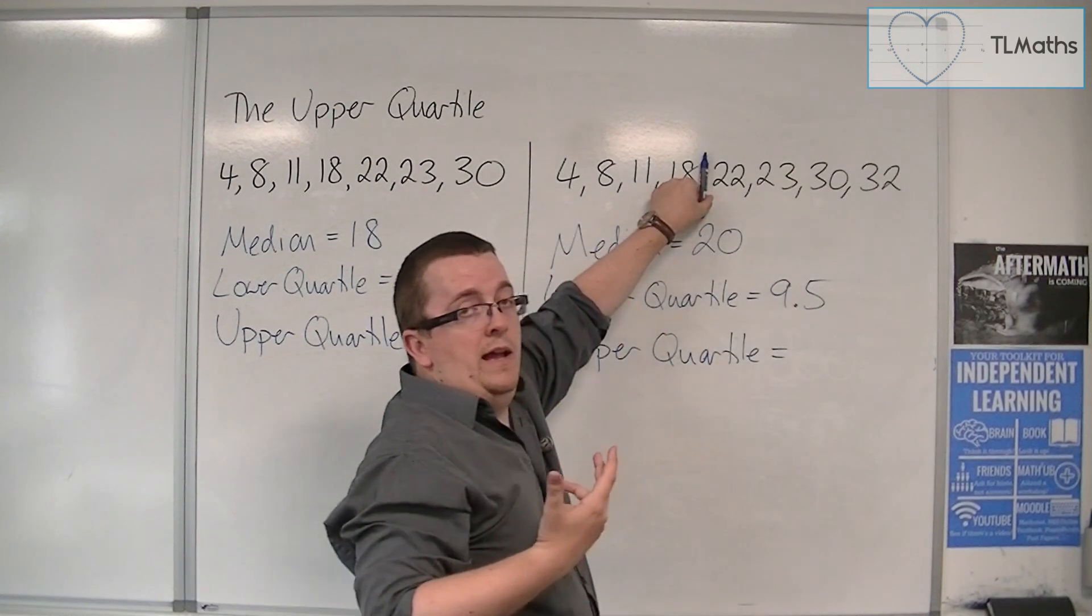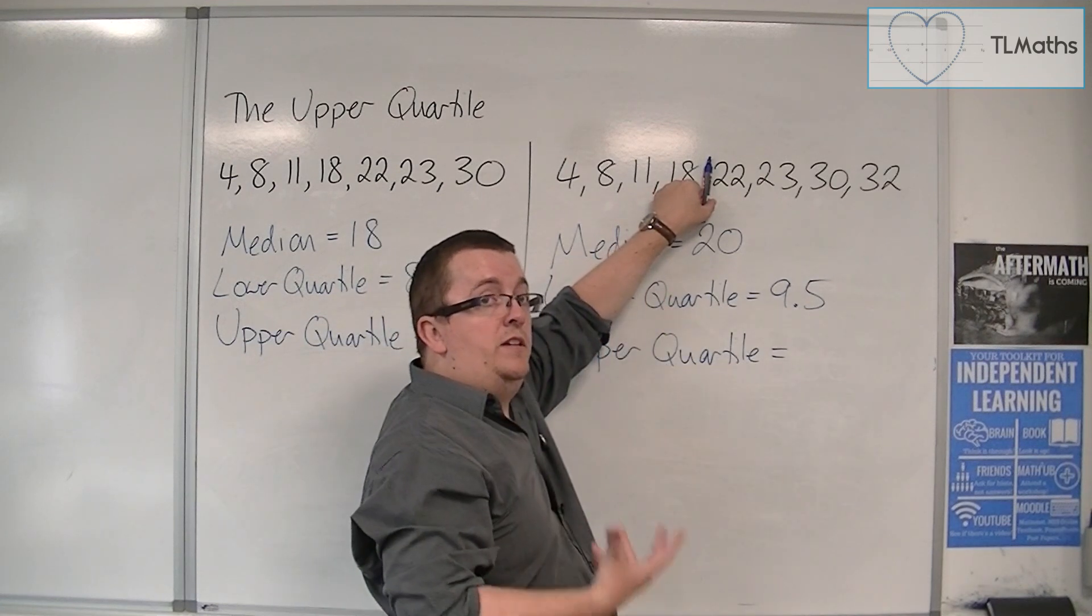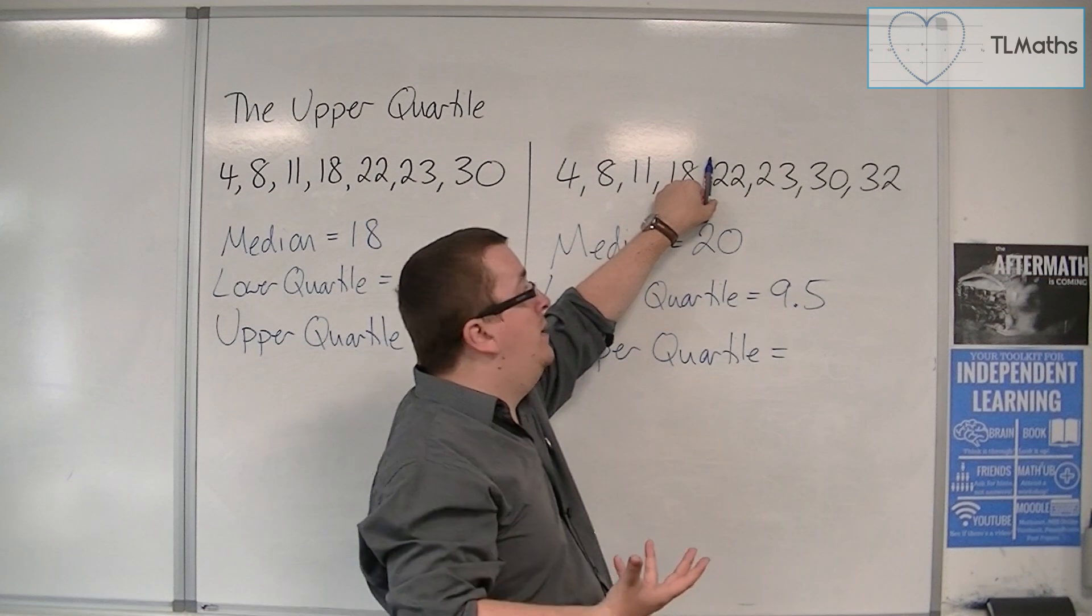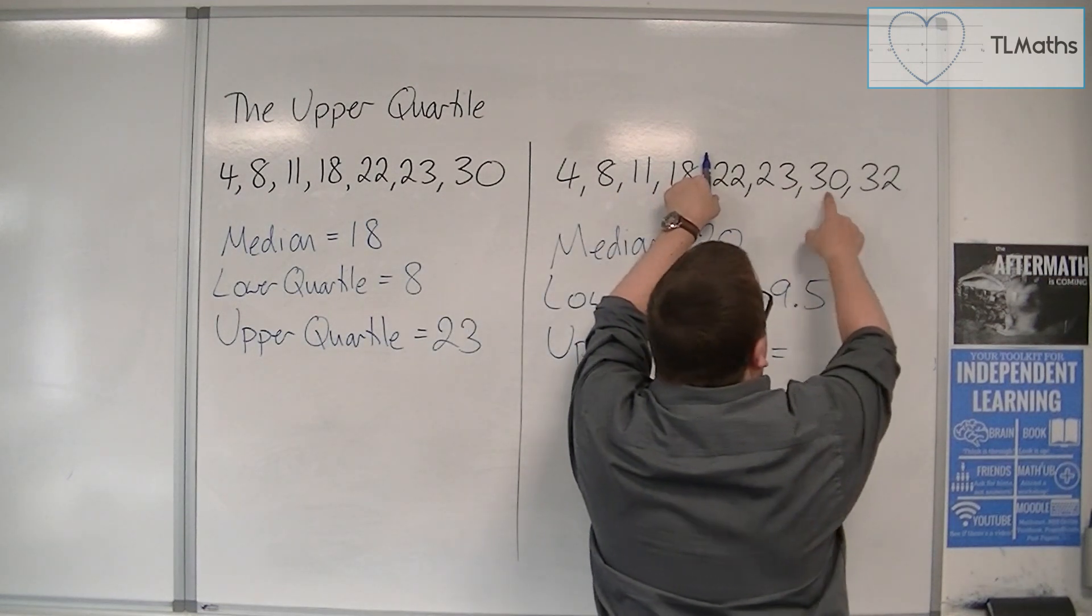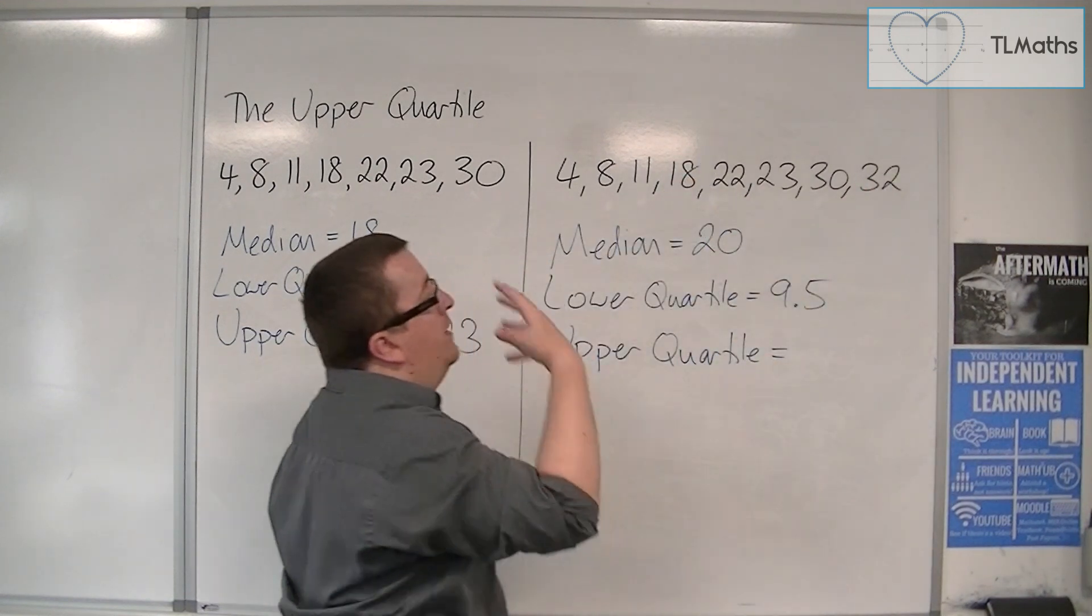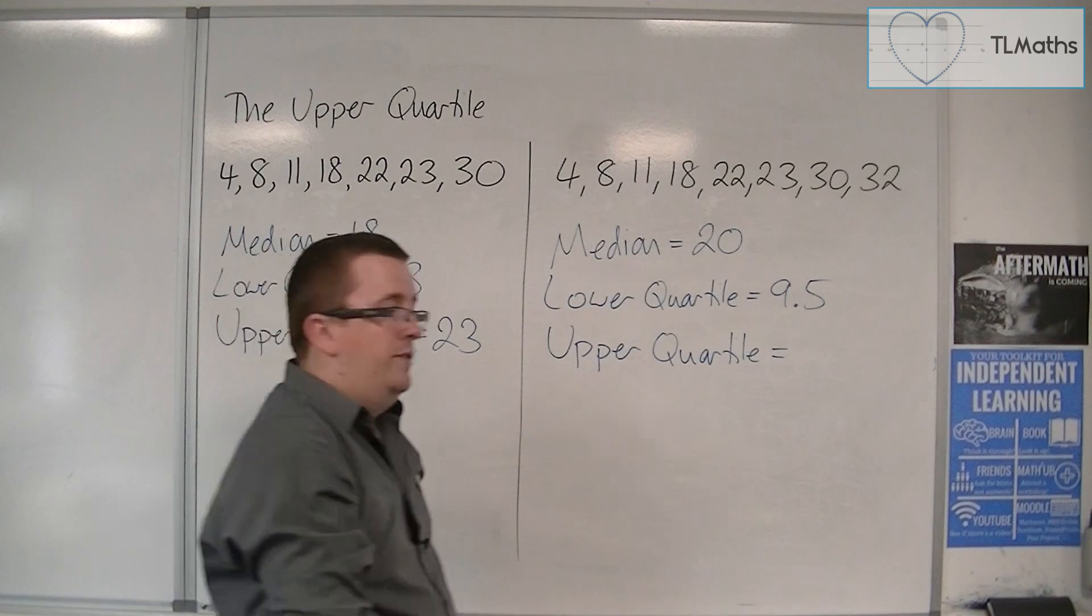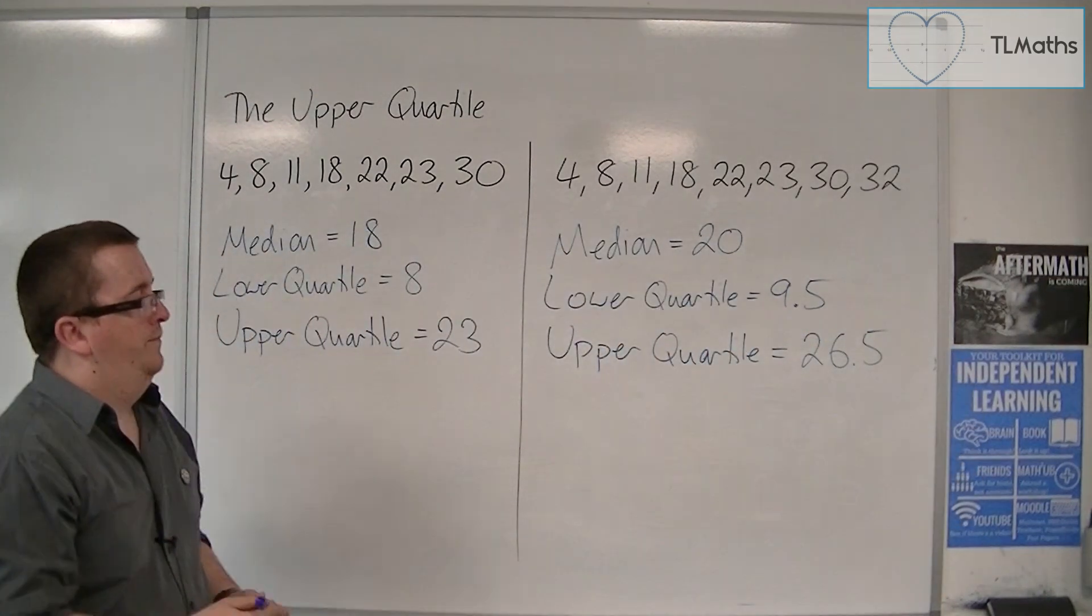Now, a quick way to find the middle number is to add them together and divide by 2 if you're ever unsure. But 23 to 30 is a 7 difference. Half of 7 is 3.5, and so it would be 26.5, and so that would be your upper quartile.